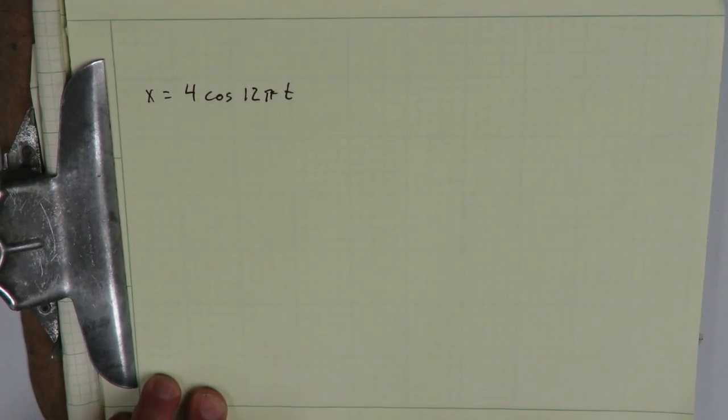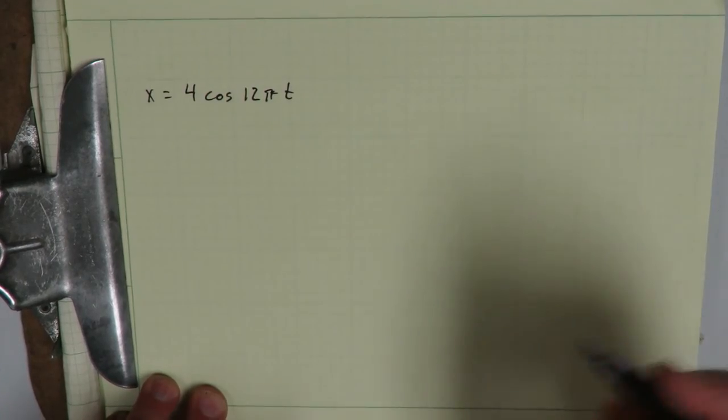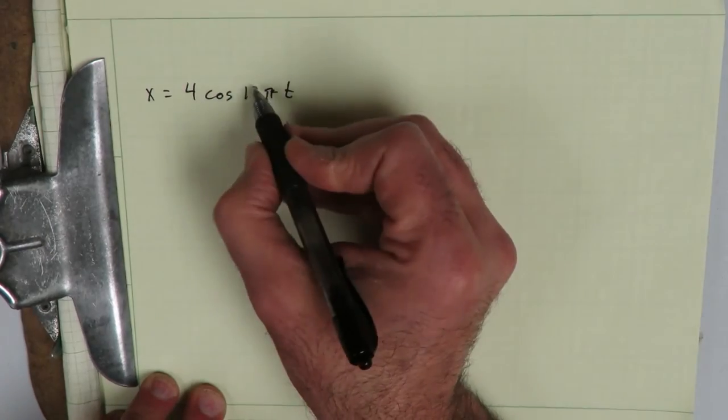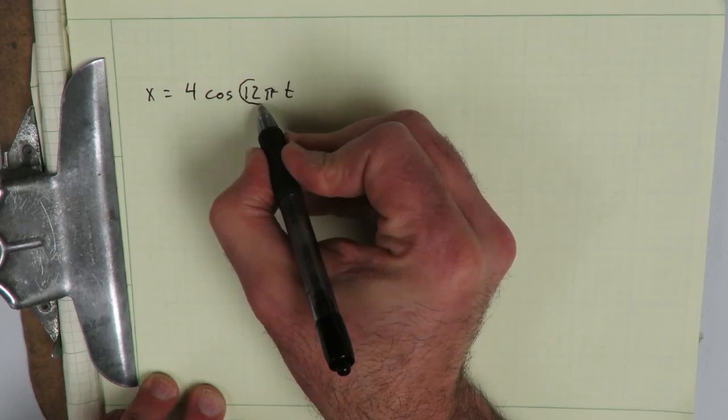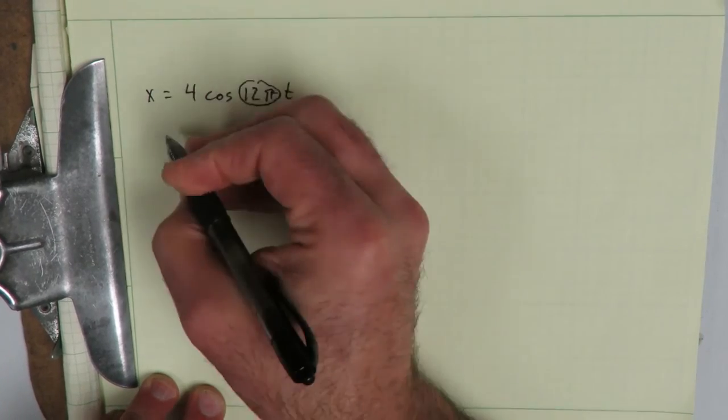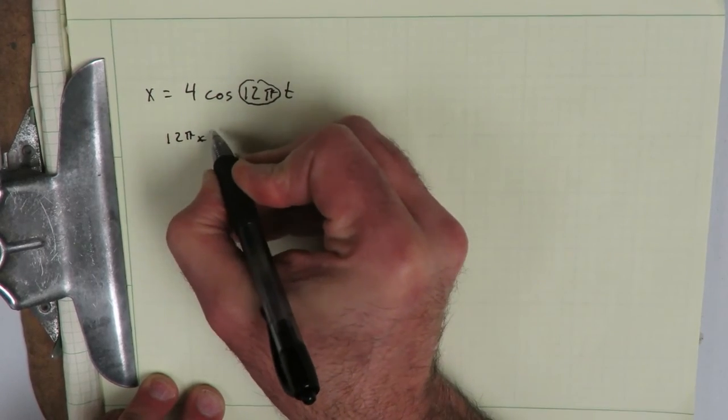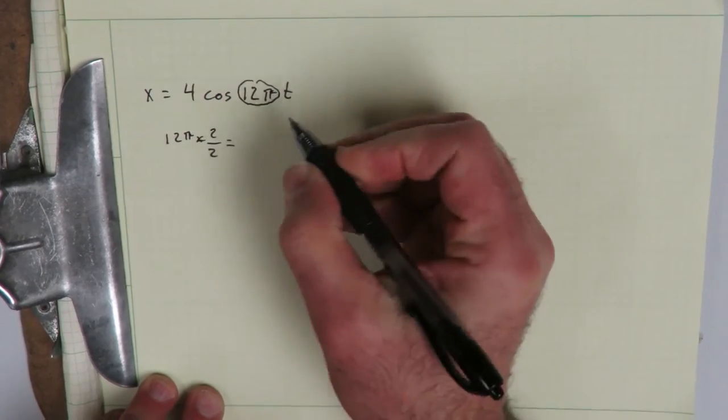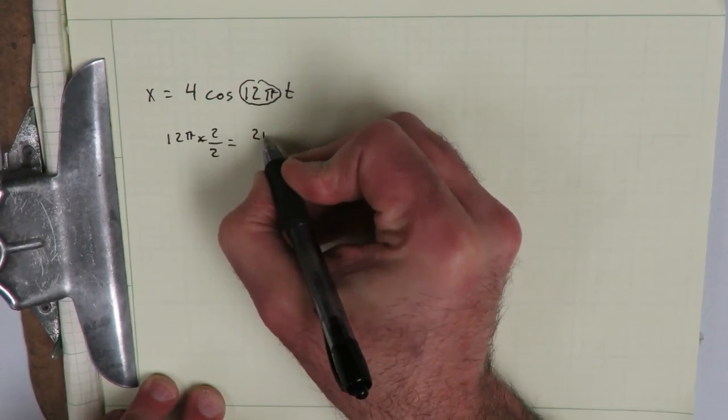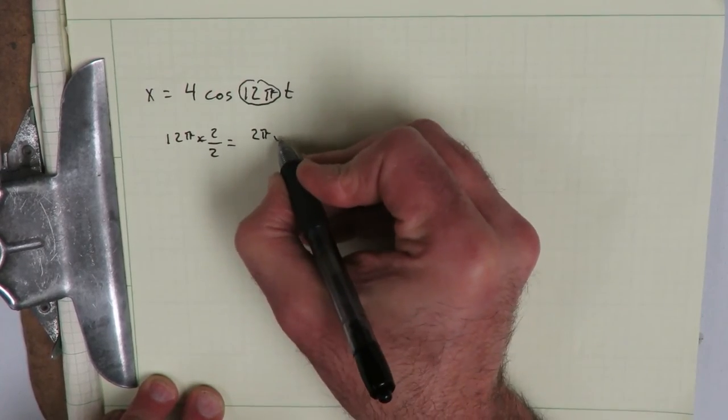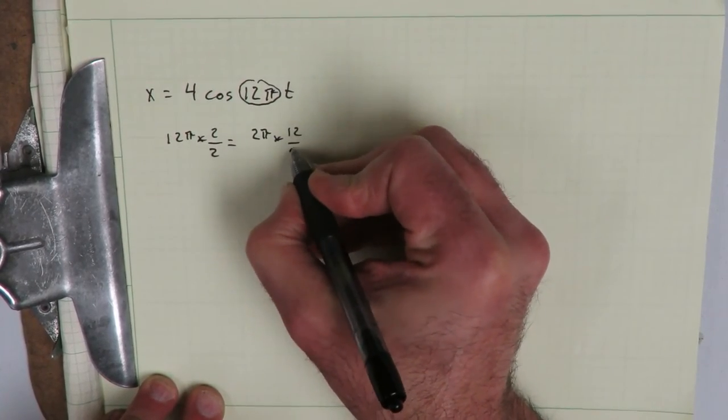How are we going to transform this into something more useful? So what we're interested in is the 12 pi, that's the part that's not fitting. So we're going to take 12 pi and multiply that by 2 over 2 and we get 2 pi times 12 over 2.